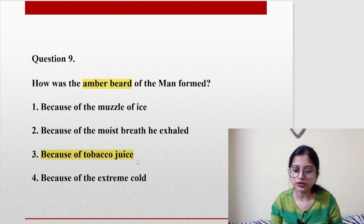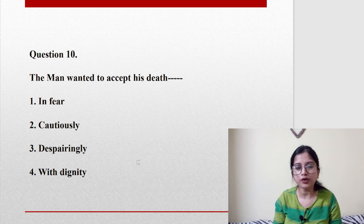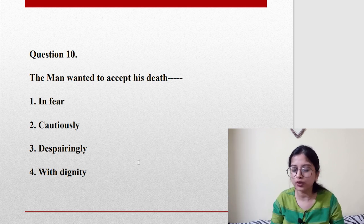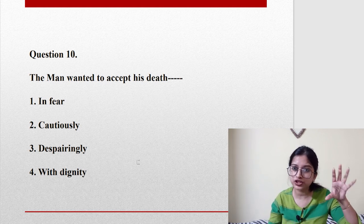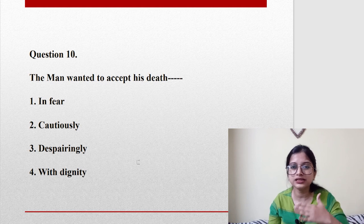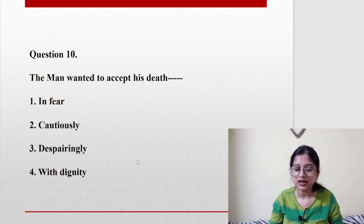Last question for today: The man wanted to accept his death how? In fear, cautiously, despairingly, or with dignity? This is directly from your book. Remember the explanation of the chicken running around with its head cut off? He didn't want to run around like that chicken for no use. He wanted to accept his death with dignity—option number four.